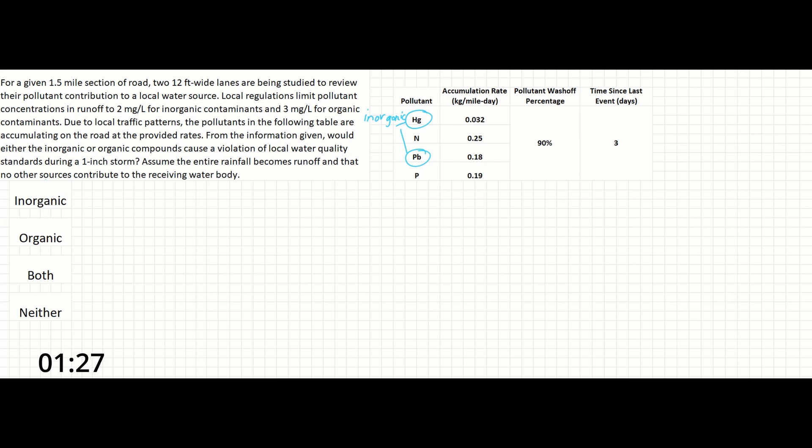Nitrogen, N, and phosphorus, P, are our organic contaminants.